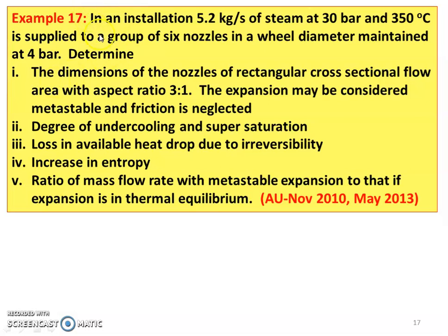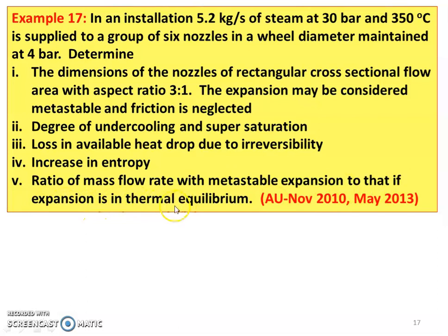Next, example number 17. In an installation, 5.2 kg/s of steam at 30 bar and 350°C is supplied to a group of six nozzles in a wheel, with exit pressure maintained at 4 bar. Determine: (1) dimensions of nozzles of rectangular cross-sectional area with aspect ratio 3:1, where expansion is considered metastable and friction is neglected; (2) degree of undercooling and supersaturation; (3) loss in available heat drop due to irreversibility; (4) increase in entropy; and (5) ratio of mass flow rate with metastable expansion to that with expansion in thermal equilibrium. This question appeared in two university examinations, November 2010 and May 2013.